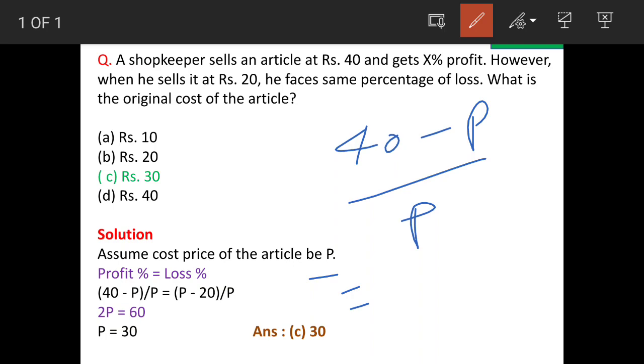And loss will be how much? P minus 20 divided by P. So here we are subtracting P from the profit cost, and here we are subtracting loss from the original price. So just keep this in mind, this small thing.